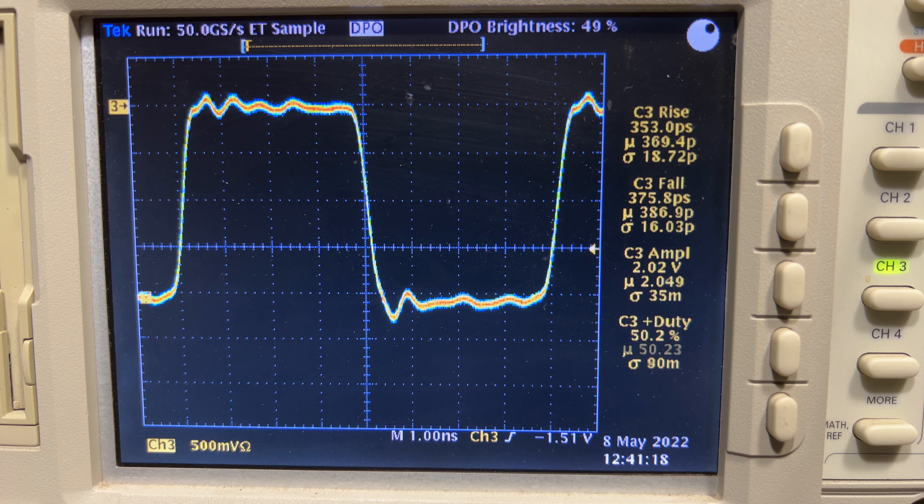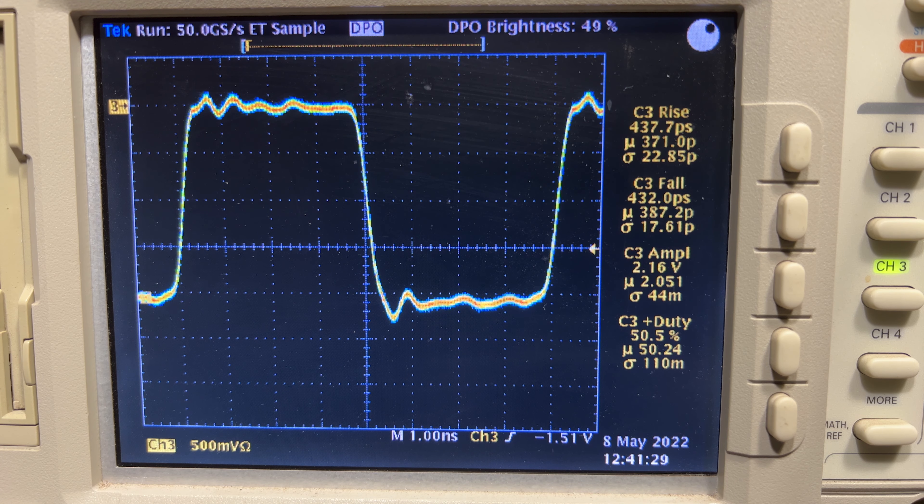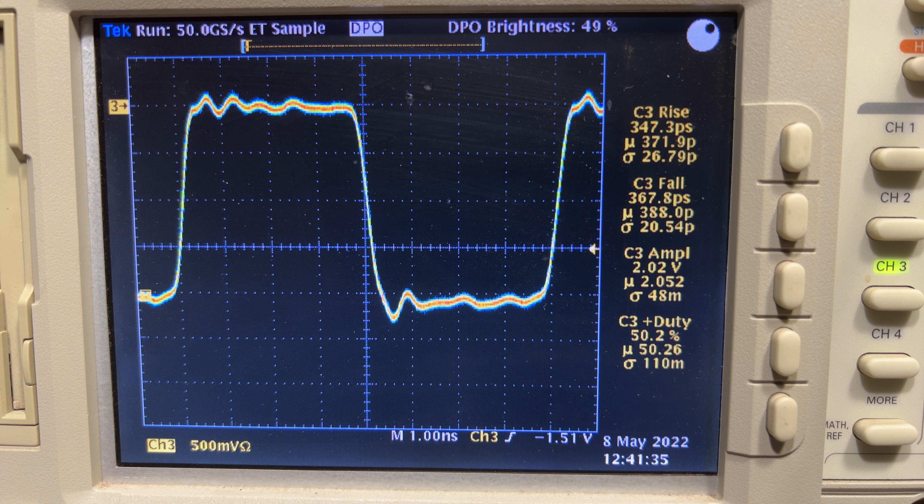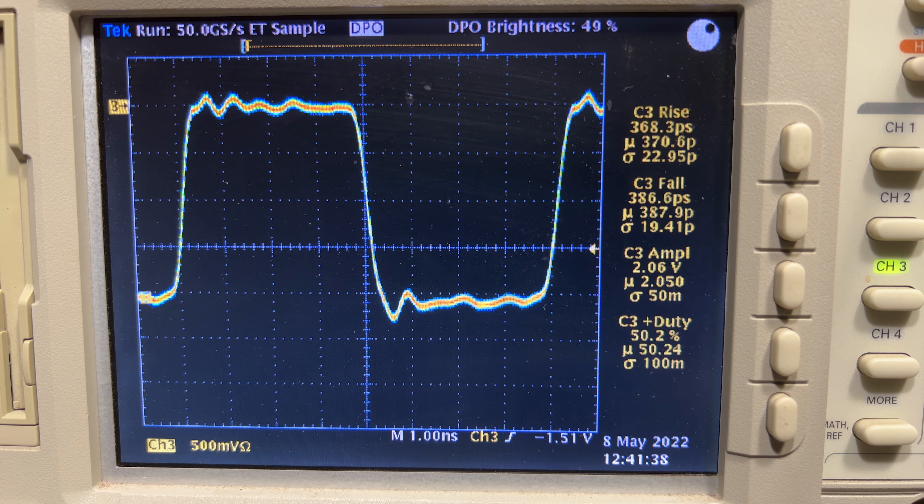Now we're zoomed in on the scope, making a measurement of the Colby Pulse Generator. We can see that the average rise time is running 360 to 370 picoseconds, and the average fall time is running between 380 and 390 picoseconds.